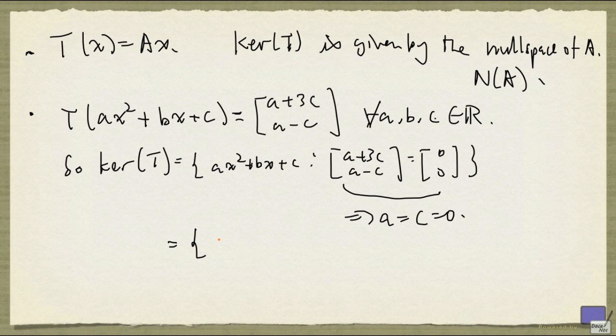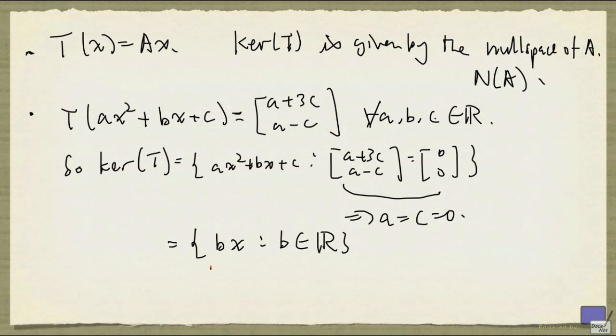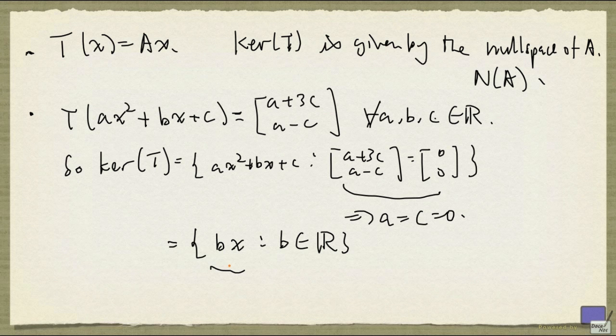And so, what's left is just bx. So any polynomial of this form, some constant times x, is in the kernel of T.